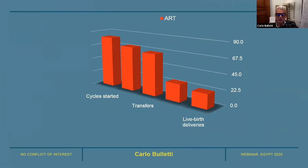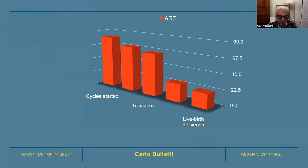Here you can see what is the efficiency of the single step in IVF, according to cycles started after the transfer — the big gap that is between transfer and implantation. That is because we have an efficiency of about 25%, versus 80% for instance in the mouse.